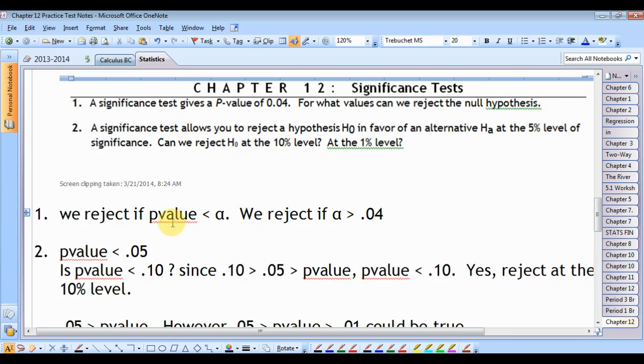Well, remember, you reject if the p-value is less than alpha. And so in other words, if you have any alpha greater than 0.04, you would reject your null hypothesis. What values would that be? 0.04, 1, and a half.